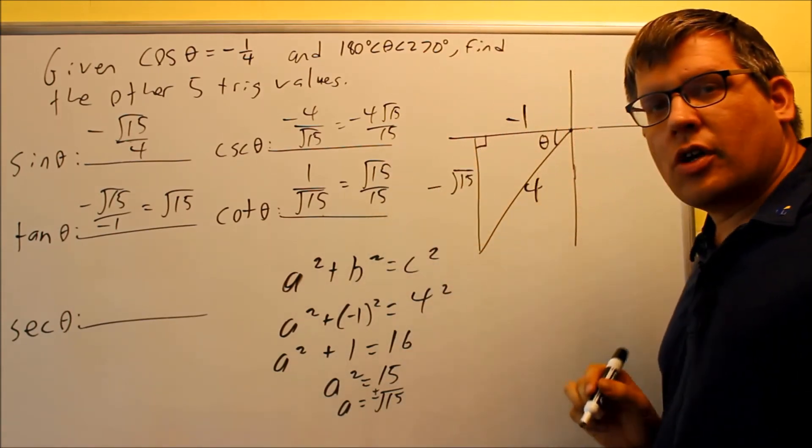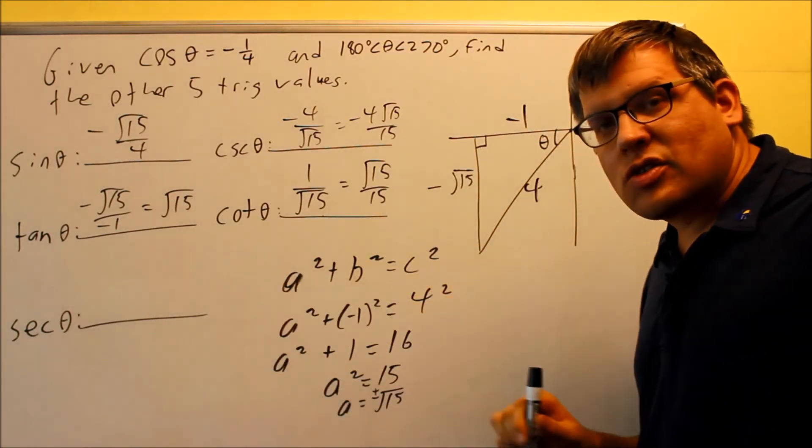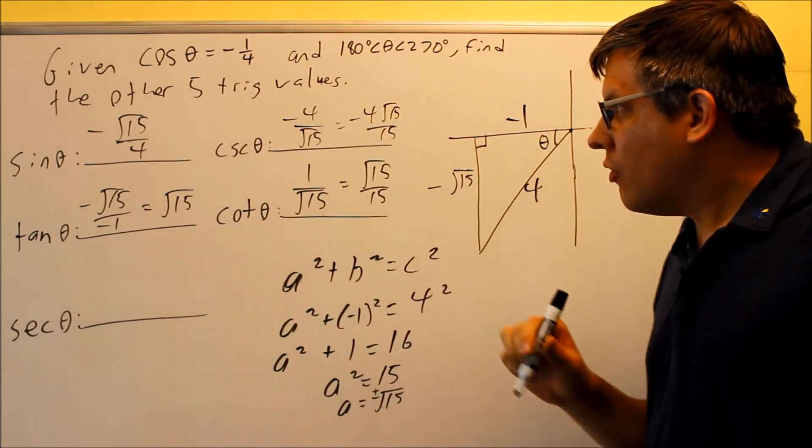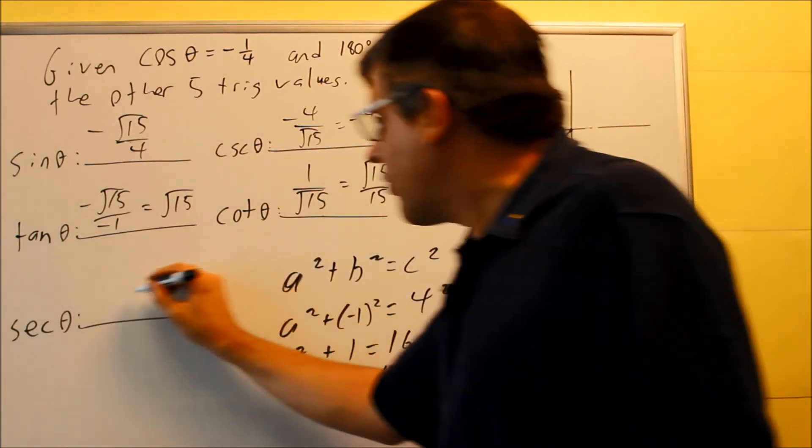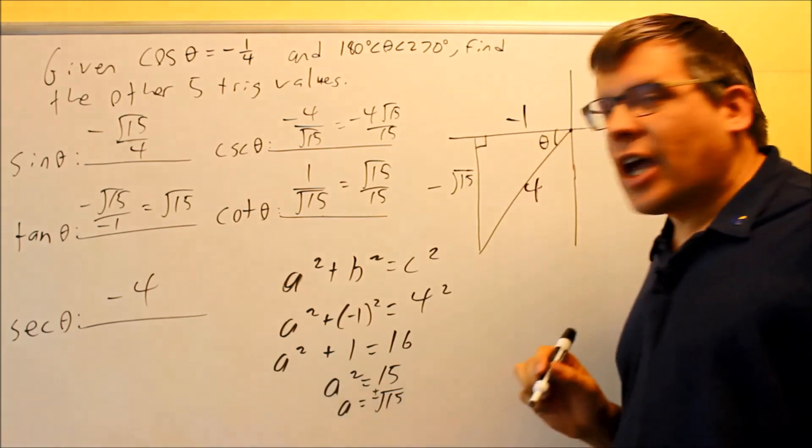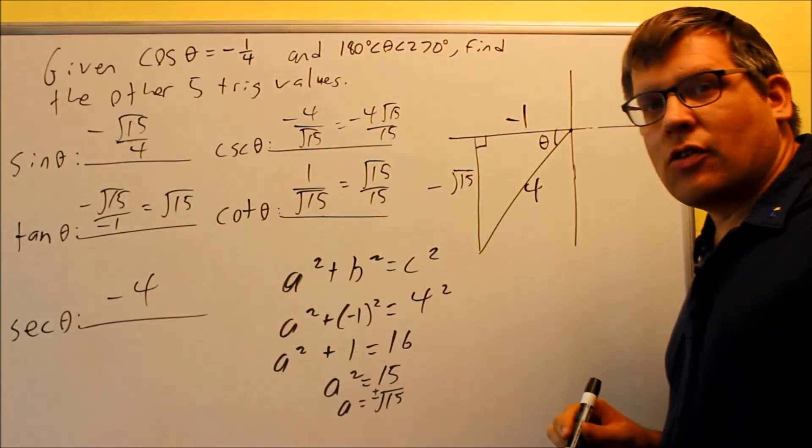The last one, secant, would be the reciprocal of negative one-fourth, so if I flip that, I'm going to get negative four over one, or just negative four.